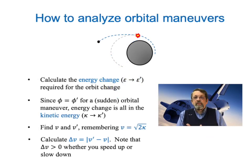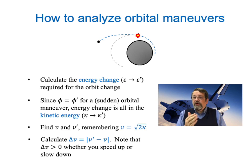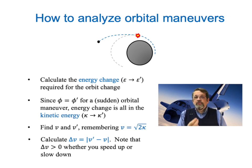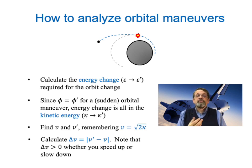This analysis of an orbital maneuver always proceeds the same way. First, determine the change in energy of the satellite needed for the change in orbit. Because potential energy is the same just before and just after the maneuver — the spacecraft hasn't moved — all the energy change is a change in kinetic energy. From the initial and final kinetic energies, we determine the initial and final speeds, which gives us delta-v. Remember, delta-v is always positive: whether speeding up or slowing down, we expend rocket fuel either way.